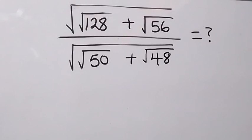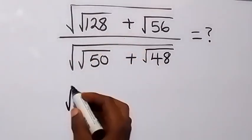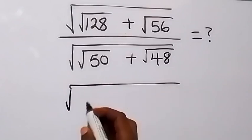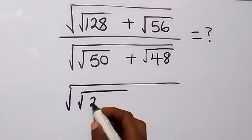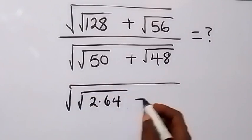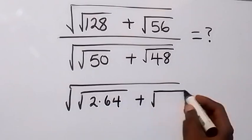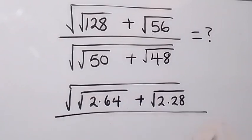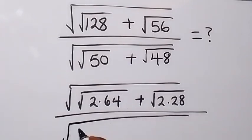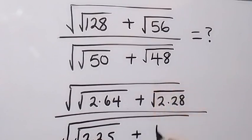We can write this as square root of what we have in the numerator as square root of 128, and here we can write it as 2 times 64. Then plus, here as well we have square root of 2 times 28. Then over what we have in the denominator, we can write that as square root of 50 as 2 times 25, then plus root 48 as 2 times 24.